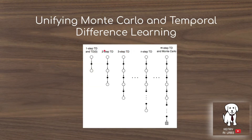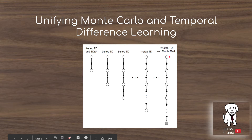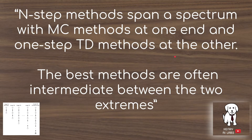N-step bootstrapping defines a spectrum between one-step TD learning — where we take a state-action and then value-estimate the next state-action pair — and Monte Carlo learning, where we sample an entire episode and use the actual return to propagate the signal back to all value estimates. The problem with Monte Carlo is that it can be very noisy, while one-step TD is not very computationally efficient. N-step methods span the full spectrum, and for most model-free RL problems the best methods are often intermediates between the two extremes.